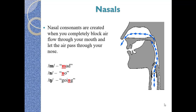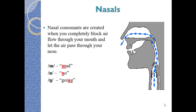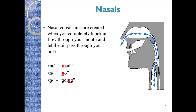Nasal consonants are created when you completely block airflow through your mouth and let the air pass through your nose — like m, n, and ŋ. For example, 'm' as in 'mad' or 'mother'; 'n' as in 'no' or 'now'; and 'ŋ' as in 'going' or 'cooking'. Note that 'n' and 'ŋ' are different.